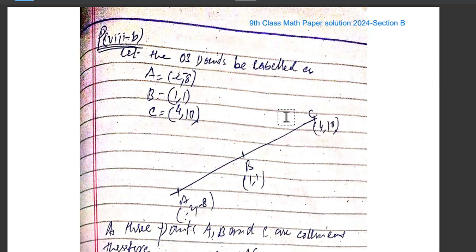Let's start the solution. This question is about collinear three points. We have three points given to us and need to find that all three points are collinear. Let the three points be labeled as A equals (-2, -8), B equals (1, 1), and C equals (4, 10).